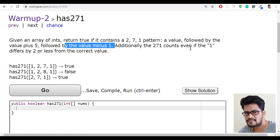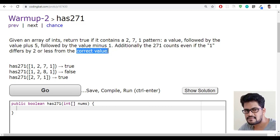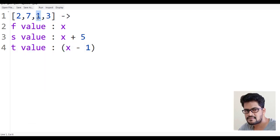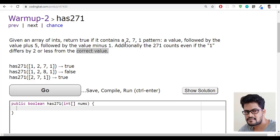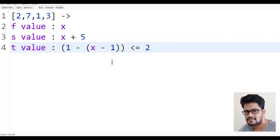Additionally, the 271 counts even if the 1 differs by 2 or less from the correct value. So they are looking for x minus 1. They are looking for the third value, which means i plus 2. So i plus 2 minus the i plus 1 minus 1. So this is what they are expecting. Let me write a solution for this.